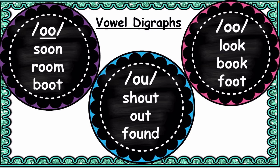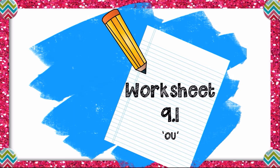Under the long 'oo' sound we have: soon, room, and boot. Under the 'ow' sound we have: shout, out, and found. Under the short 'oo' sound we have: look, book, and foot.